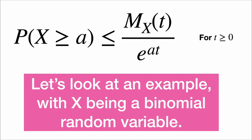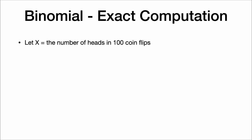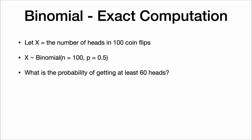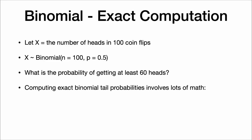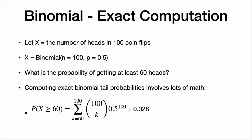Let's look at an example with x being a binomial random variable — specifically, the number of heads in 100 coin flips, which we expect to be about 50. So x is binomial with parameters n equals 100 and p equals 0.5. I want to know: what is the probability of getting at least 60 heads? With a computer this isn't that difficult, and we can compute it using software like R. The probability that x is at least 60 is 0.028.